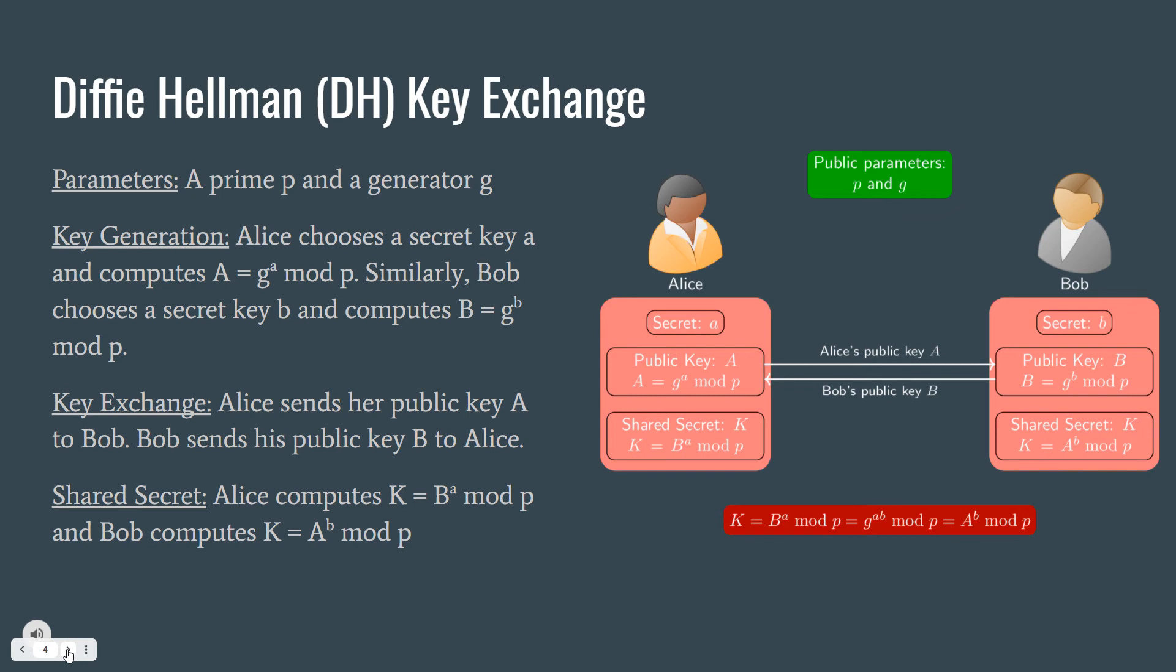In the key exchange step, Alice sends her public key capital A to Bob, and Bob sends his public key capital B to Alice. And finally, for the shared secret key computation, Alice computes capital B to the small A mod p, and Bob computes capital A to the small B mod p. Notice that both of them are equal because they are equal to g to the A times B mod p.